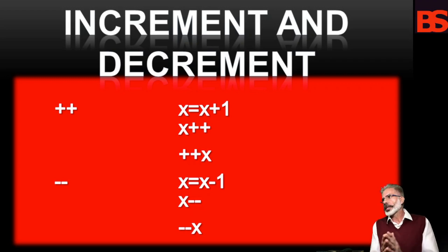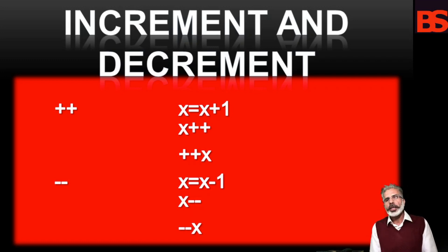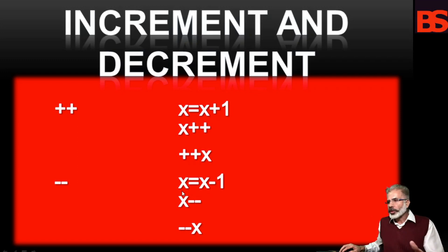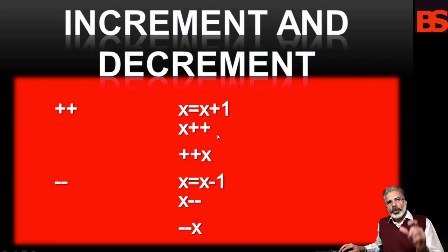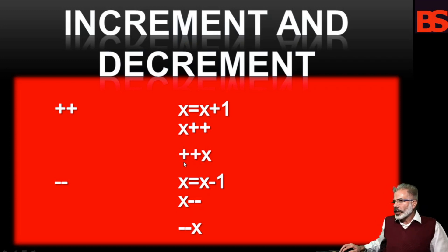Next are the increment and decrement operators. The ++ and -- are Java's increment and decrement operators. The increment operator increases its operand by 1 and the decrement operator decreases its operand by 1. These operators are unique in that they can appear in both postfix form — where they follow the operand — and prefix form — where they precede the operand.